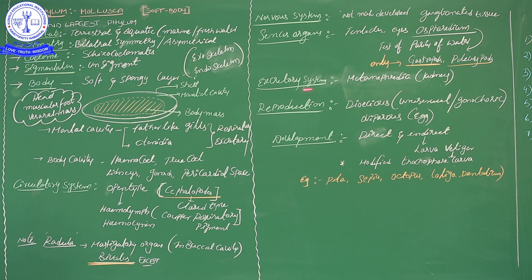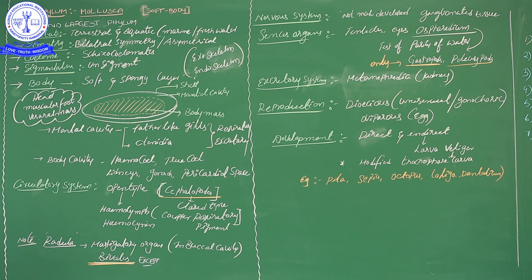The excretory system of mollusca consists of metanephridia. Recall that in Platyhelminthes, excretion is done by flame cells, called protonephridia. In Annelida, metanephridia are present — a slightly more developed form. Meta indicates a next generation or advanced stage. So metanephridia are like kidneys, but not yet fully developed kidneys.